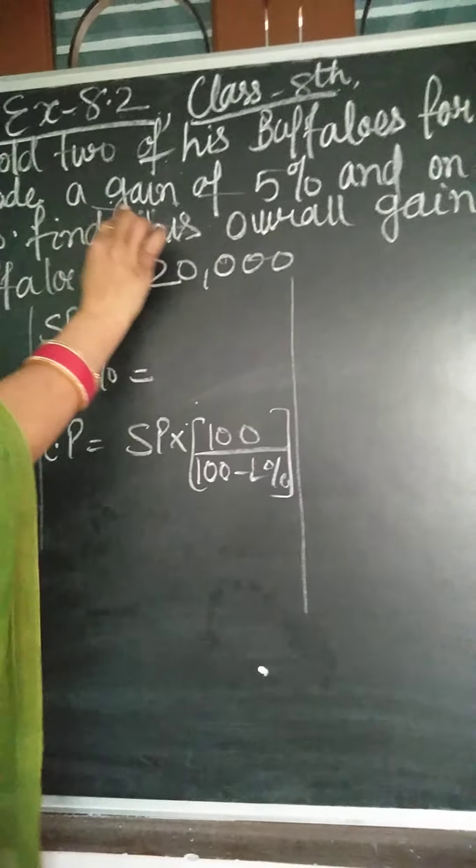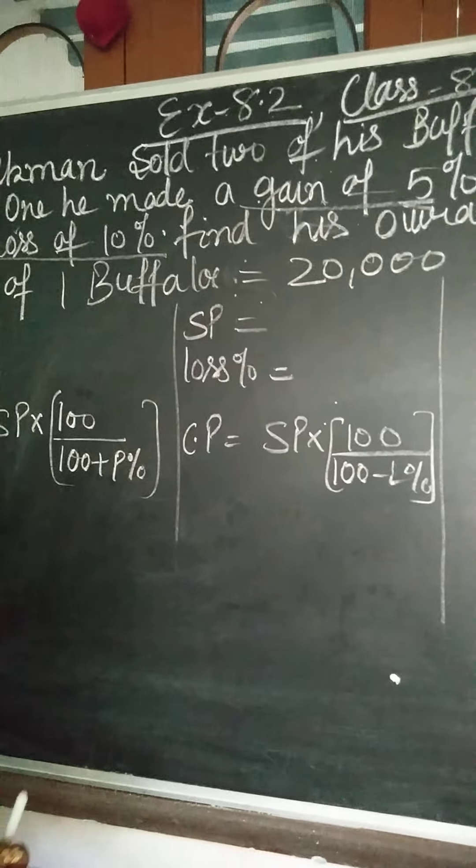He made a gain of 5%. On the other hand, a loss of 10%. The point is overall gain or loss. He said that total overall profit or loss.